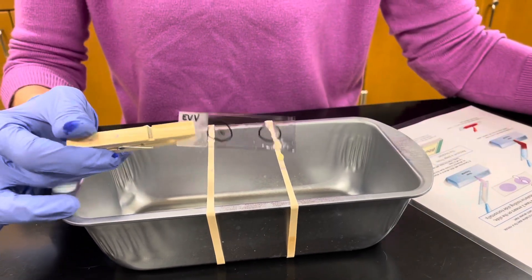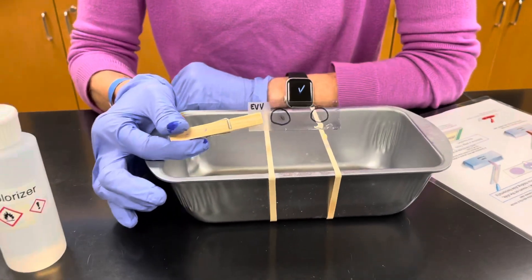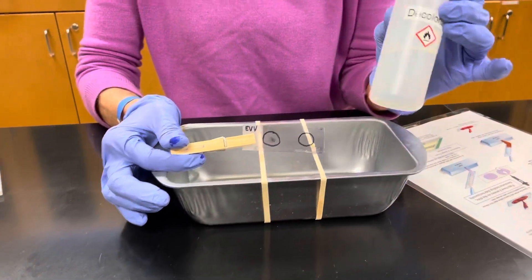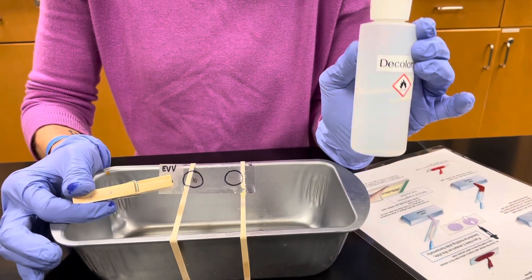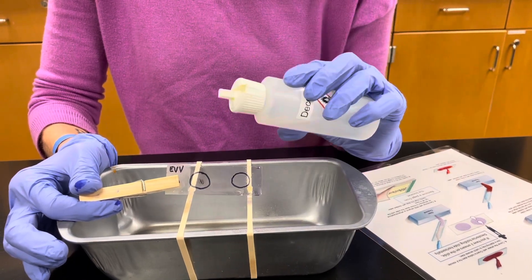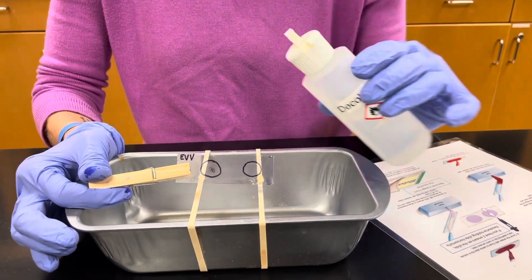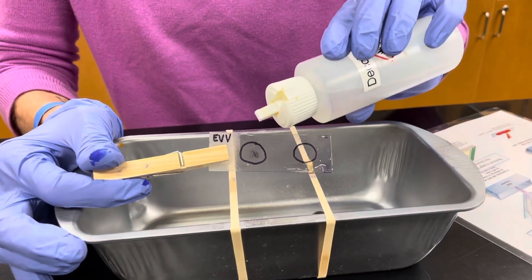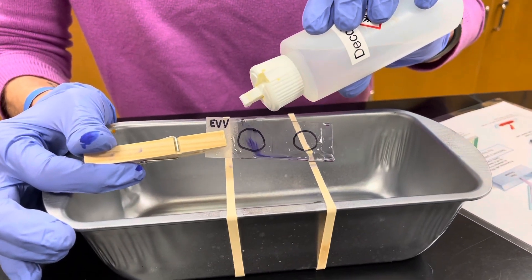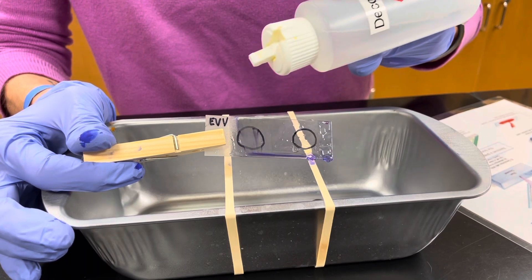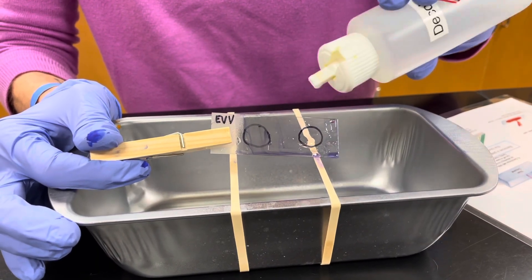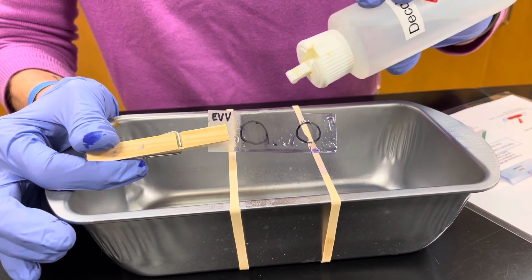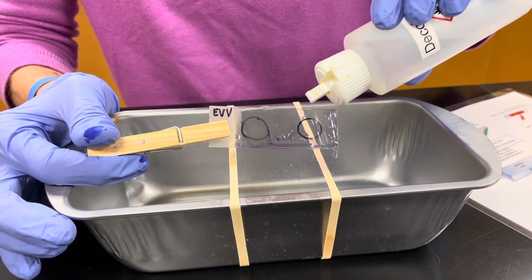The next step is decolorization and it's probably the most critical step in doing a Gram stain. Our decolorizer is ethanol and what you're trying to do, you just want to add enough decolorizer till the purple runs clear. So I'm going to add just drop by drop. Just drop by drop till you no longer see purple running on the other side.